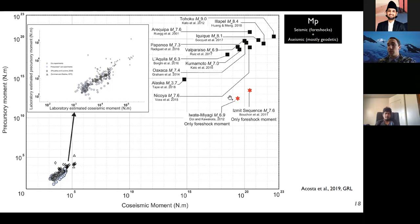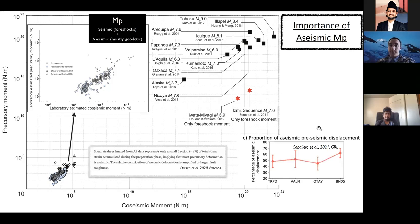Two stars show earthquakes where precursory moment was estimated only from the contribution of foreshocks, and we see the precursory moment is widely underestimated compared to our observations, highlighting that including aseismic slip in the total precursory moment is very important. Dresden and colleagues showed in the laboratory that acoustic emission moment release is very small compared to aseismic slip moment release. For the Valparaiso earthquake, Caballero and colleagues found that aseismic pre-seismic displacement can reach at least 50 percent of total precursory displacement in nature.